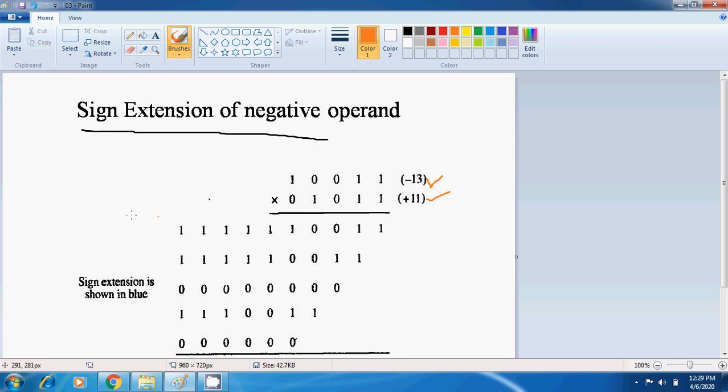As you know, if the multiplier size is n bit, then the product must contain 2n bits. So if multiplier size is 4 bits, the product must hold 2 times 4, 8 bits. So here multiplier is of 5 bits, so our product must be of 10 bits.